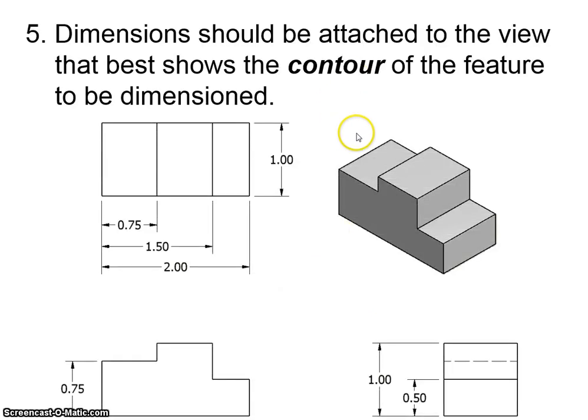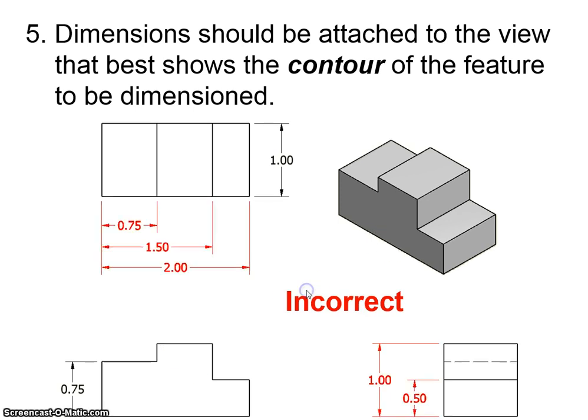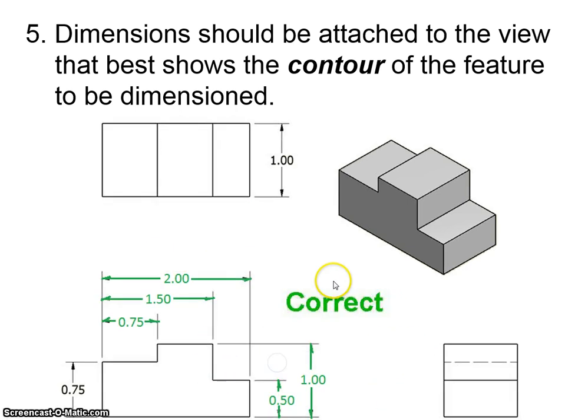Rule number five, dimensions should be attached to the view that best shows the contour of the feature to be dimensioned. So what I mean by that is, you see how this top view here, well, it's really hard to tell that this, this, and this are really on different heights. So these dimensions here are actually better placed on this view, where you can see that there are different heights to the feature. Similarly, same deal over here. These parts here should really be over here for the same reason, okay? So that's why most of the dimensions in the drawing are correct to put on the front view, because the front view is the one with the most detail, most contours.